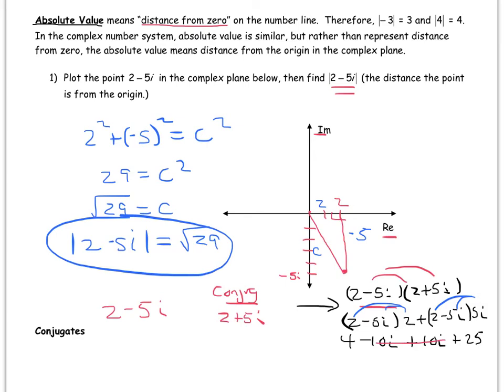And that is the thing that happens when you multiply a complex number times its conjugate—the imaginary parts go away. And you get 29.